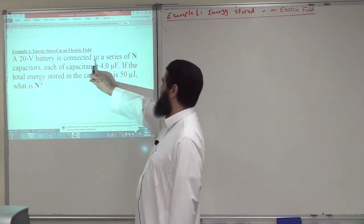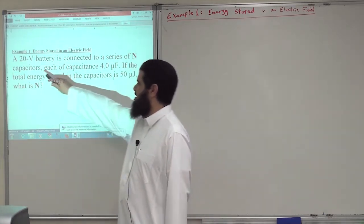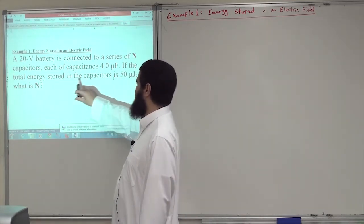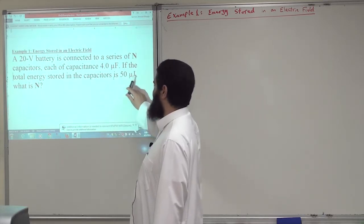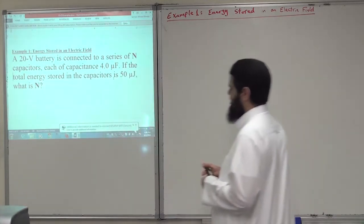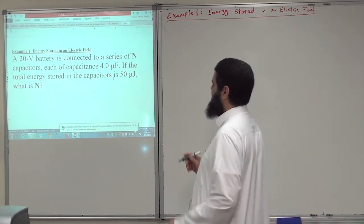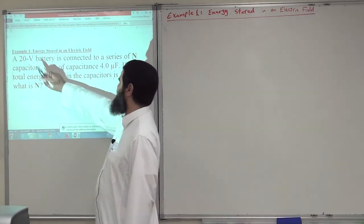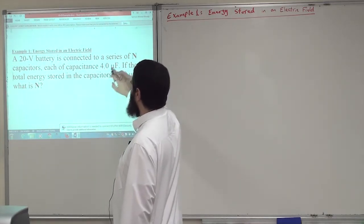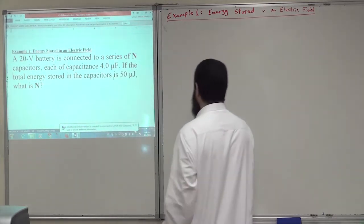We have a 20 volt battery connected to a series of N capacitors, each of capacitance 4 microfarad. If the total energy stored in the capacitors is 50 microjoules, what is the number of capacitors N? We want to know how many capacitors are connected in series with a 20 volt battery.